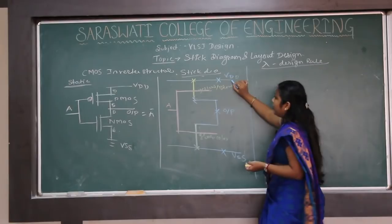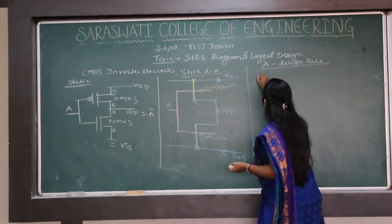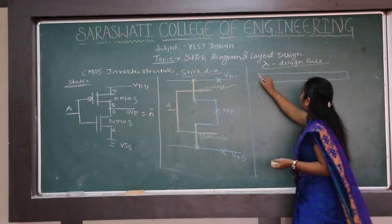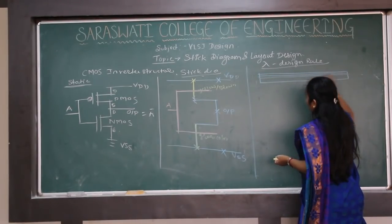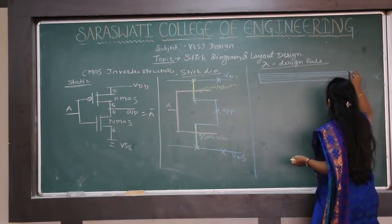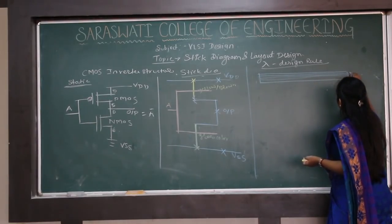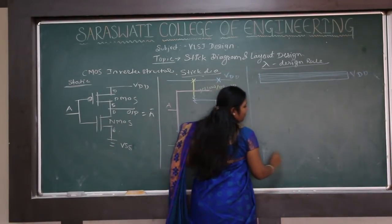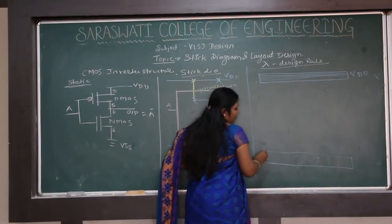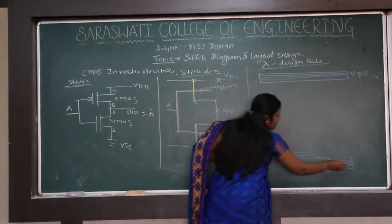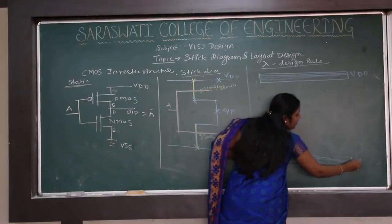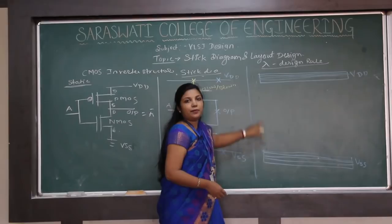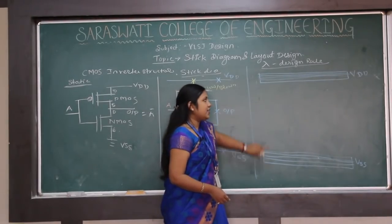For the VDD line in the layout, we draw one solid horizontal line structure representing metal, which is provided with VDD. A second solid horizontal metallic line receives VSS. These two horizontal metal tracks represent VDD and VSS in the layout.